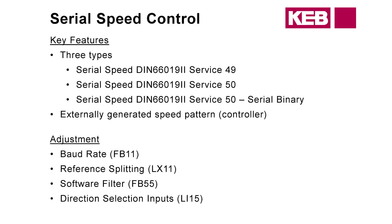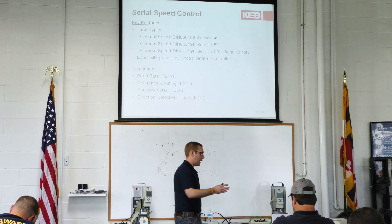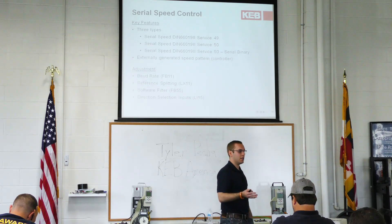Compare that to GAL, for example — they control the whole pattern. So if you're looking to make adjustments on jerk rates, XL rates, that type of thing, you would make them in the controller. But with SmartRise, since we are actually generating the XL and deceleration ramps, you would make them internal to the drive. Some adjustments include the baud rate — that's the communication rate between the drive and the controller — reference splitting, software filter for ride quality, and direction selection inputs.